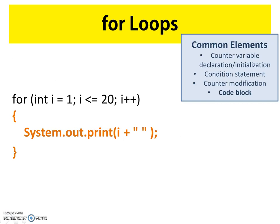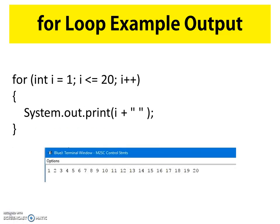The last common element highlighted is the code block — the bit of program written between the for loop's curly brackets. In our example, the System.out.print statement will print the current value of i followed by a blank space. If we add this for loop to a properly formatted main method within a class, our output would be a string of values starting at one, increasing by one up to and including 20, with a space in between, all on one line because we're using a print statement, not a println statement.